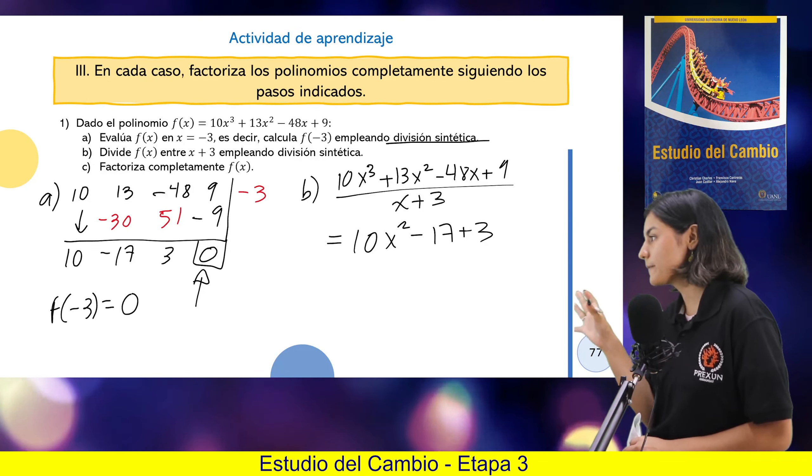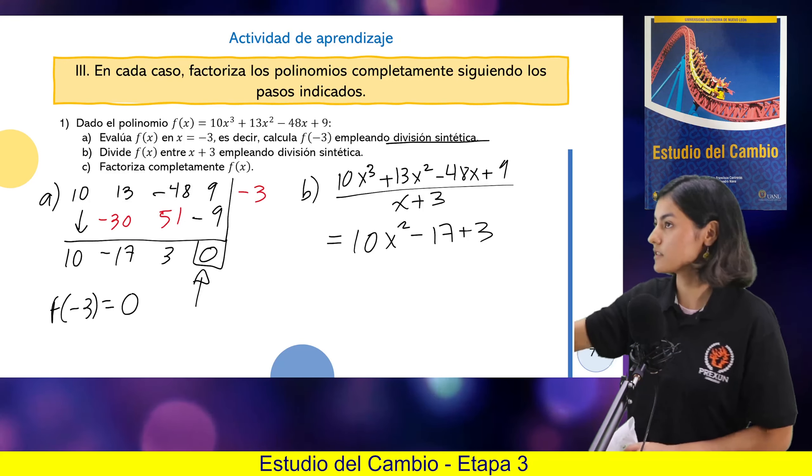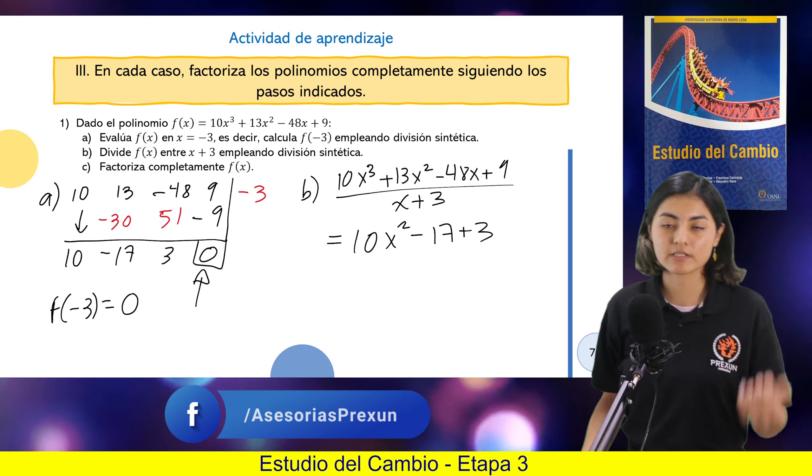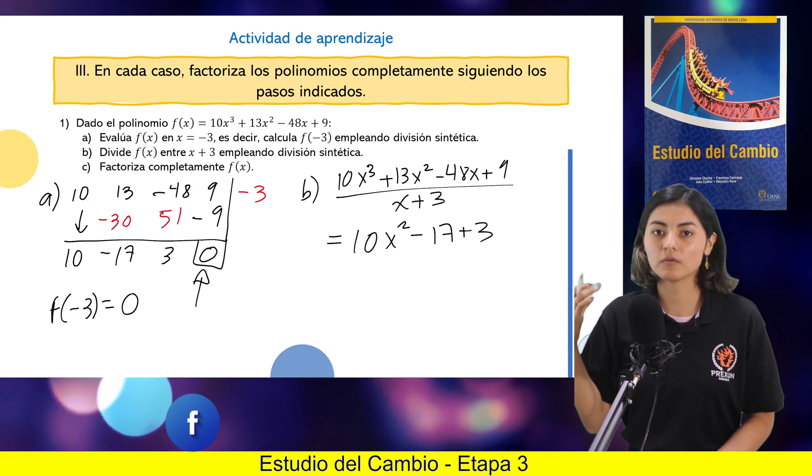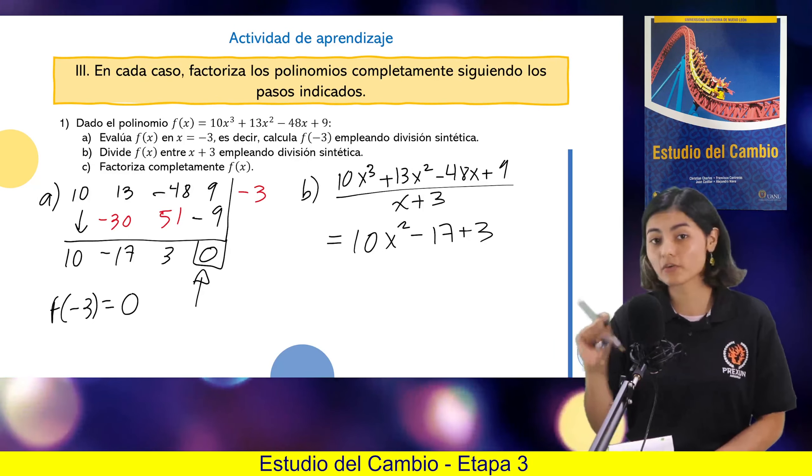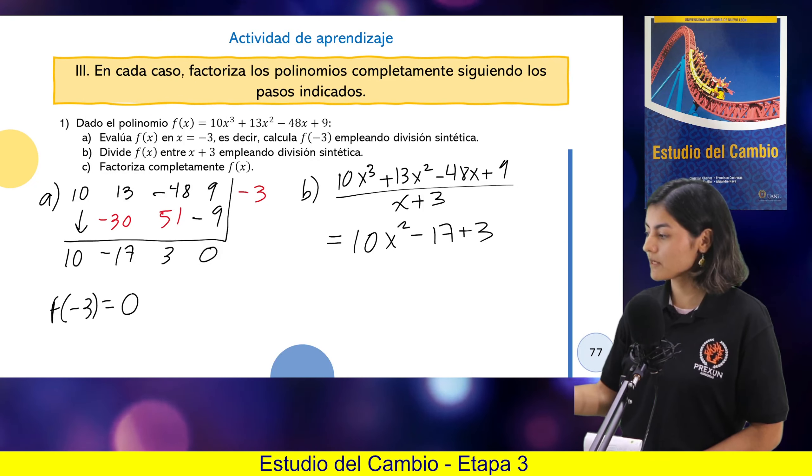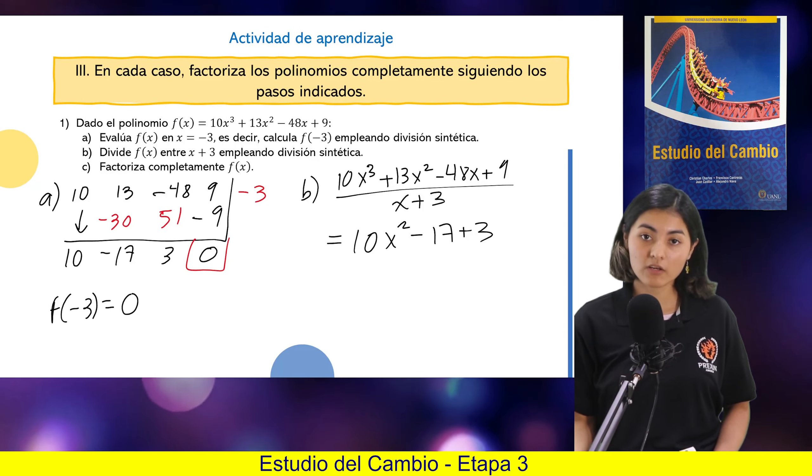Por ejemplo, en el inciso A, al evaluarlo nos piden utilizarlo utilizando la división sintética y al utilizar la división sintética nos damos cuenta que el residuo es cero. ¿Qué quiere decir? Que al evaluar nuestra función en ese punto vale cero. Pero no solo eso, significa que ese punto, el menos 3, es a lo que se le llama raíz de un polinomio.